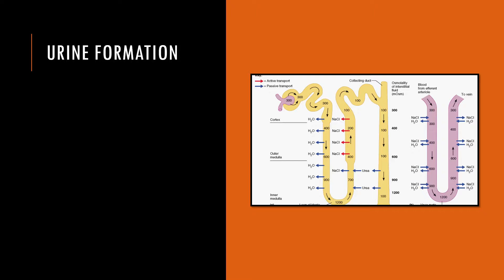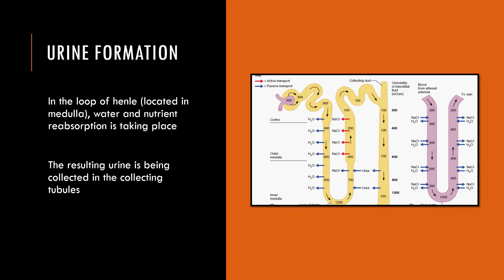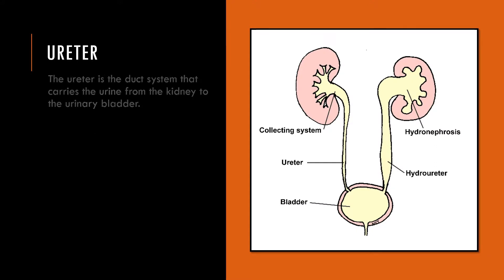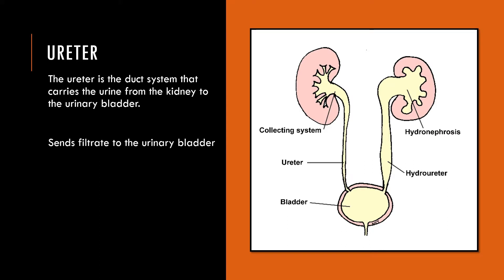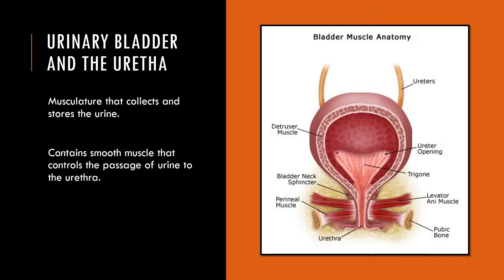Reabsorption takes place in the loop of Henle, which is located in the kidney's medulla. The result of this reabsorption and filtering is urine, which is collected in the collecting tubules. The urine is then released through the renal pelvis into the ureter — a duct system that carries urine from the kidney to the urinary bladder. The urinary bladder is musculature that collects and stores urine, and contains smooth musculature that controls the passage of urine to the urethra.